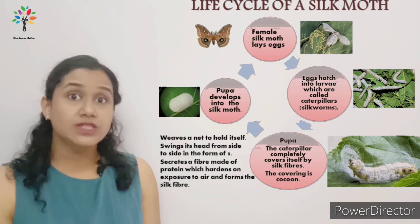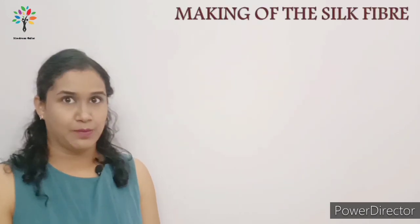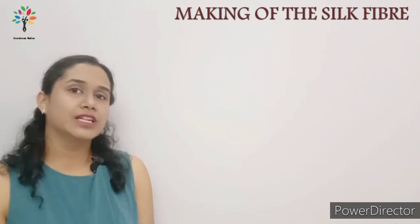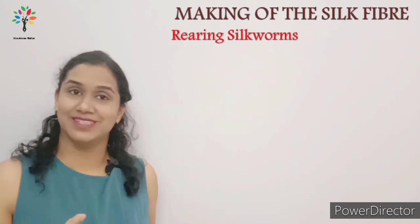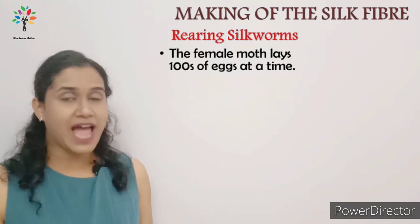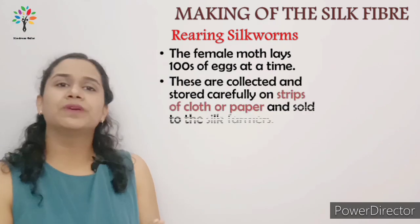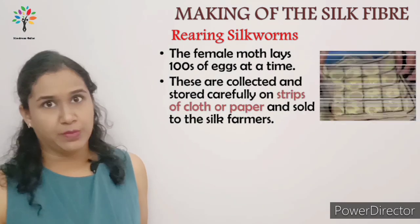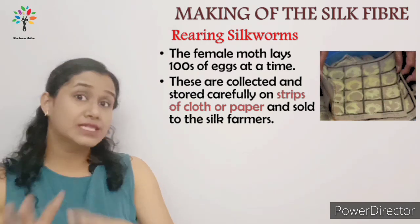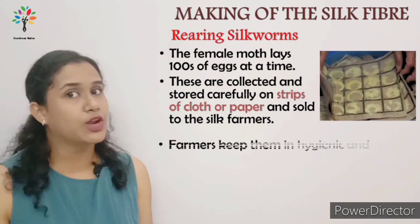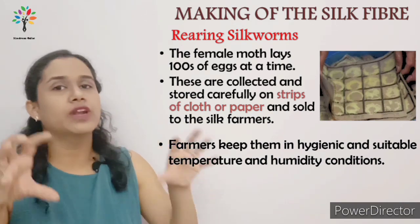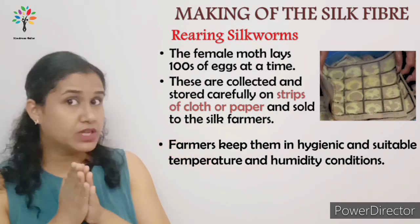Now let's see the process of making the silk fiber. Like the making of wool where the first step was rearing of sheep, for silk making the first step is the rearing of silk worms. The female moth lays hundreds of eggs on the leaves, and these eggs are very carefully collected on a piece of cloth or paper and then sold to the farmer. Silk farmers take very good care of the eggs, keeping them in hygienic conditions with proper temperature and humidity.